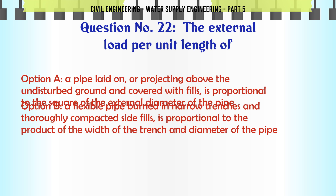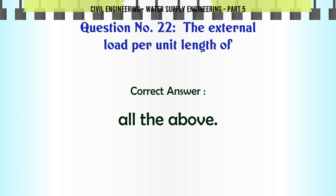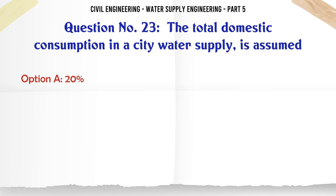The external load per unit length of a pipe: A. Laid on or projecting above undisturbed ground and covered with fills is proportional to the square of the external diameter; B. A flexible pipe buried in narrow trenches with compacted side fills is proportional to the square of the width of the trench and diameter; C. A rigid pipe buried in narrow trenches with compacted side fills is proportional to the square of the width of the trench; D. All the above. The correct answer is All the above.